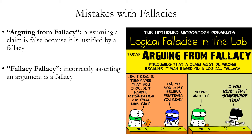The argument from unqualified authority — also sometimes called the argument from authority fallacy — is a mistake because it reasons that just because an alleged authority figure says something, therefore it must be true. This is an invalid argument because just because a person says something, even if they are an authority, it doesn't logically guarantee what they're saying is true. They could have bad information, they could be lying.